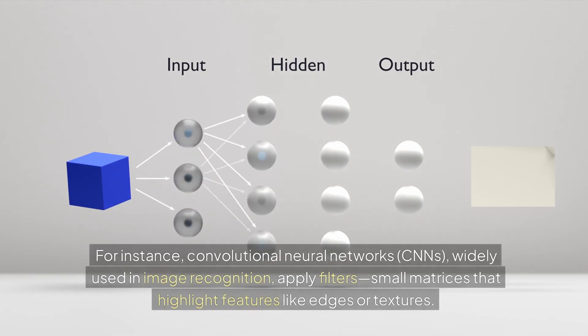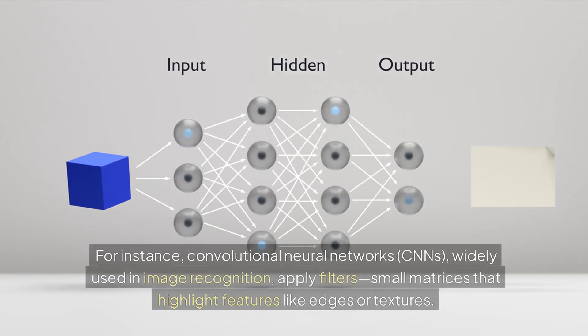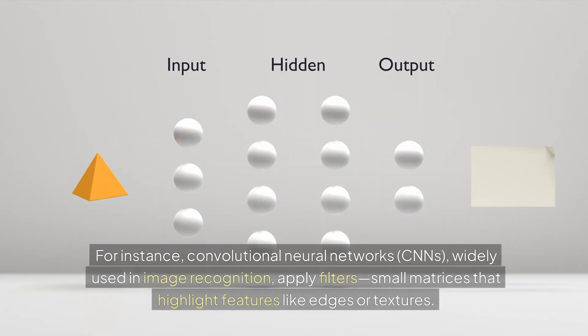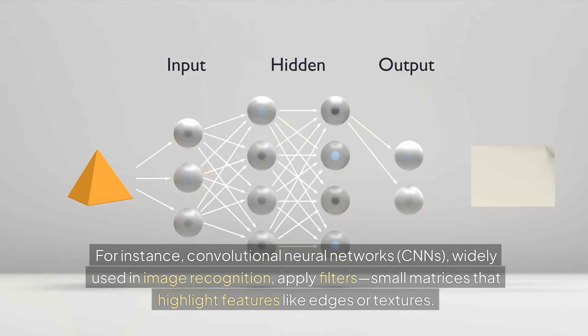For instance, convolutional neural networks (CNNs), widely used in image recognition, apply filters—small matrices that highlight features like edges or textures.